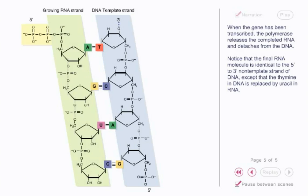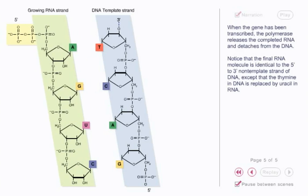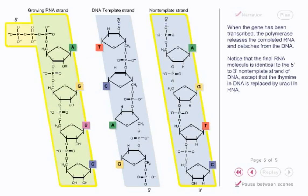When the gene has been transcribed, the polymerase releases the completed RNA and detaches from the DNA. Notice that the final RNA molecule is identical to the 5' to 3' non-template strand of DNA, except that the thymine in DNA is replaced by uracil in RNA.